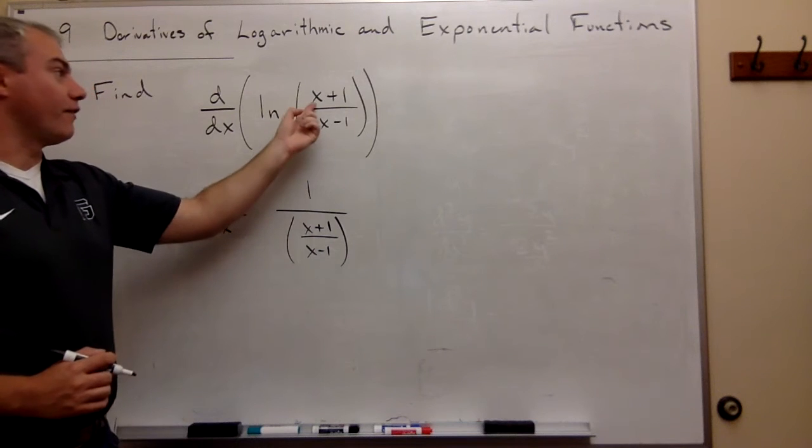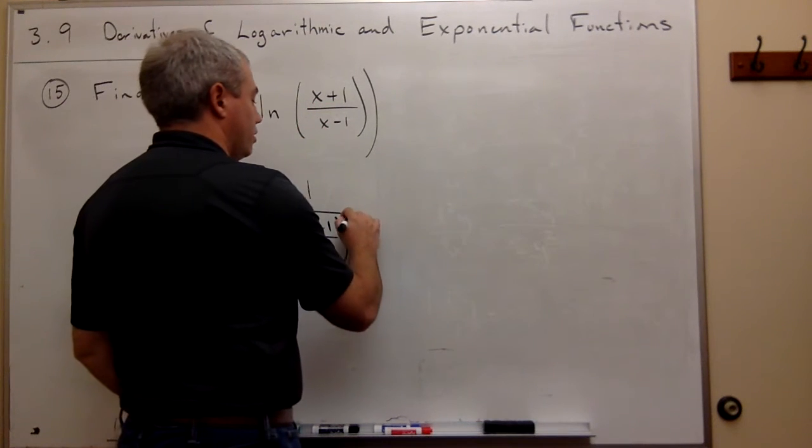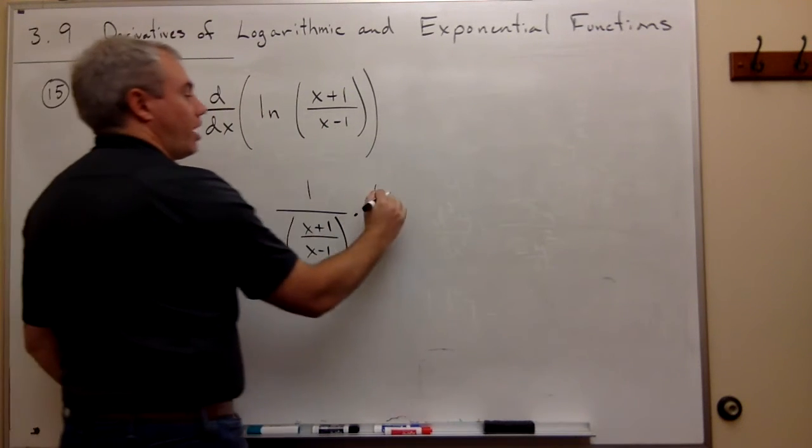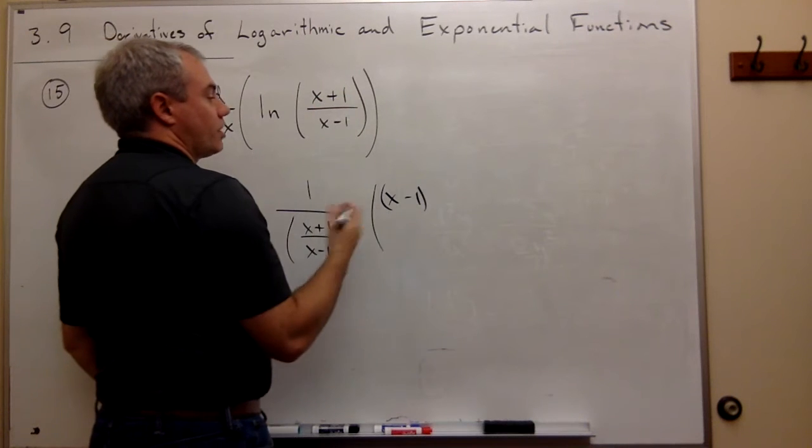So what's the derivative of (x+1)/(x-1)? Well, that's a quotient, so we need to use the quotient rule. So it's the bottom, x-1, times the derivative of the top, which is 1,